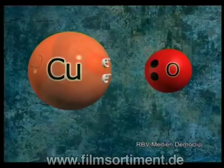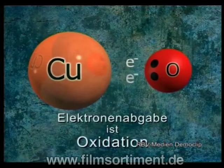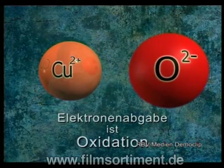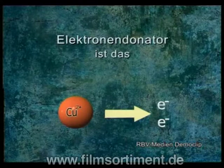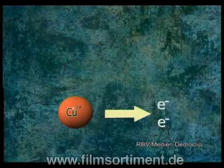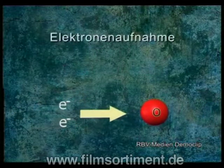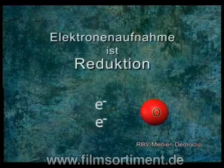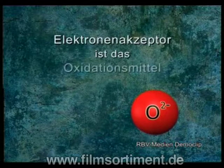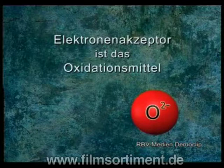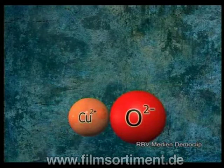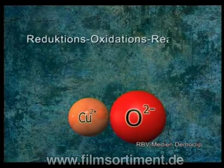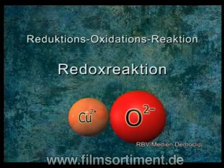Jede chemische Reaktion, bei der Atome Elektronen abgeben, ist eine Oxidation – also nicht nur die Reaktion mit Sauerstoff. Das abgebende Atom ist der Elektronendonator und somit das Reduktionsmittel. Und umgekehrt ist jede chemische Reaktion, bei der Atome Elektronen aufnehmen, eine Reduktion. Dementsprechend ist das aufnehmende Atom der Elektronen-Akzeptor und folglich das Oxidationsmittel. Reduktion und Oxidation laufen immer gleichzeitig ab. Sie werden deshalb auch als Reduktions-Oxidationsreaktion oder kurz Redoxreaktion bezeichnet.